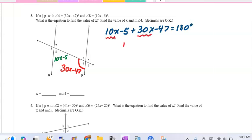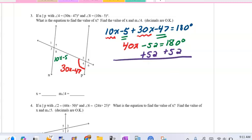We're going to combine like terms, so we're going to have 40x. When you add the negative 5 and the negative 47, you get minus 52 is 180. You're going to add 52 to both sides. Simplifying, you're going to get 180 plus 52 is 232. Then you're going to divide by 40. Again, you will get decimals on this, and you're going to get 5.8.